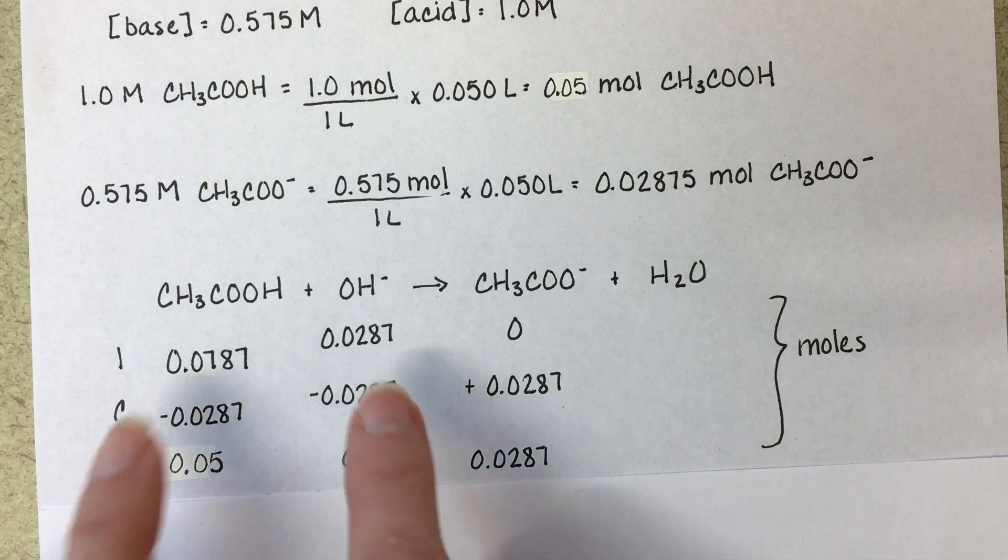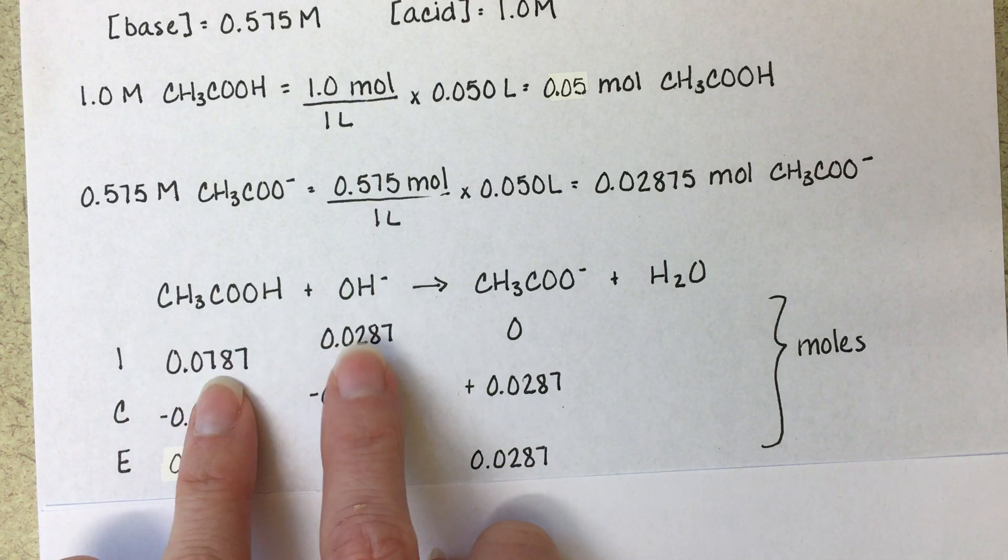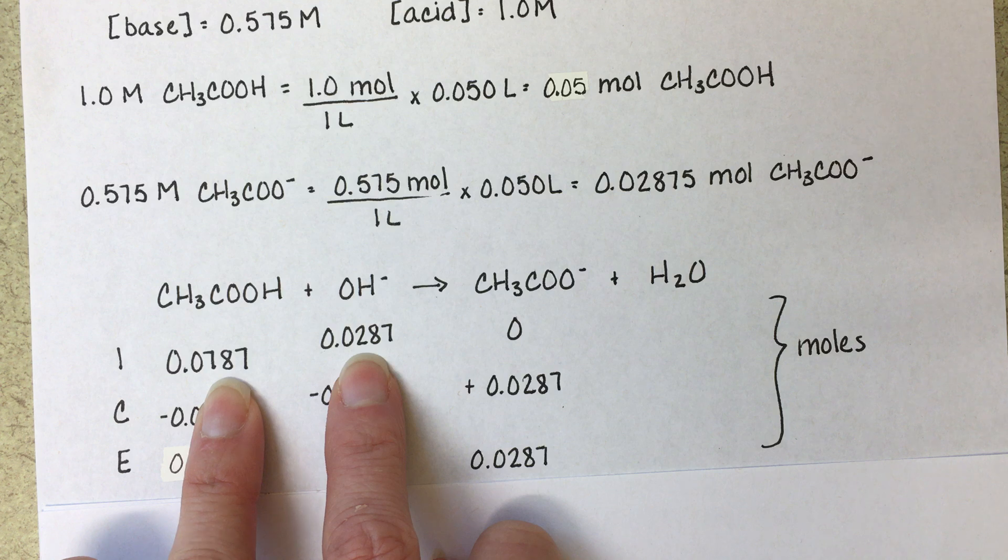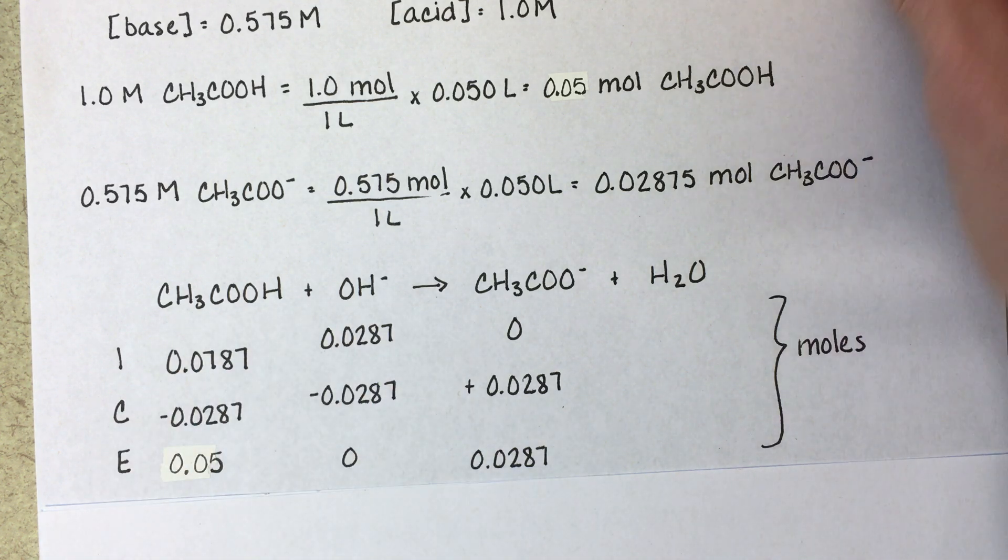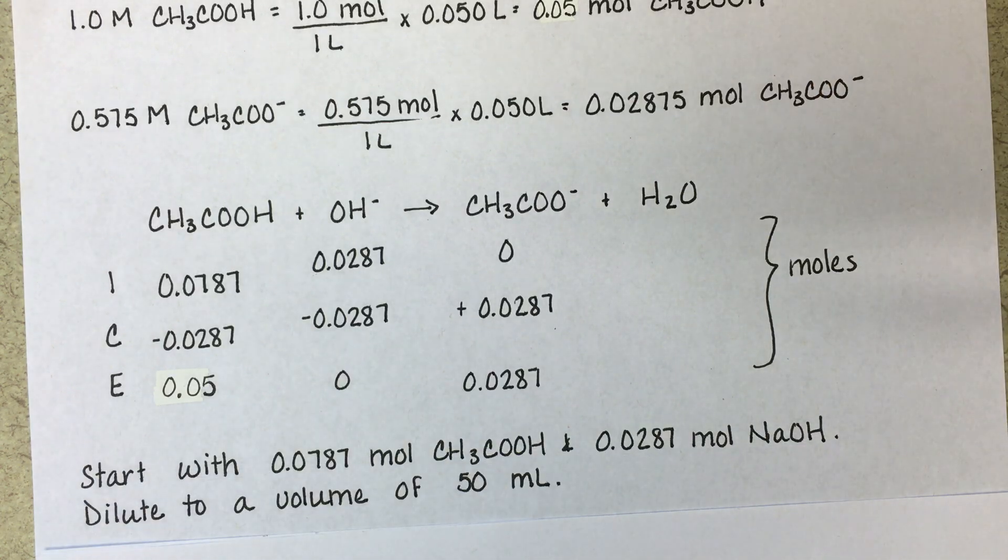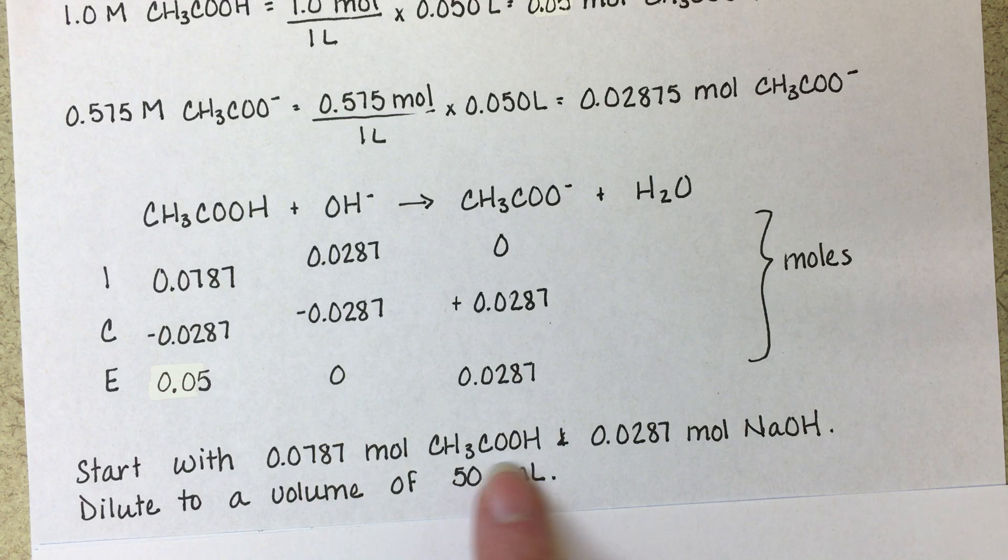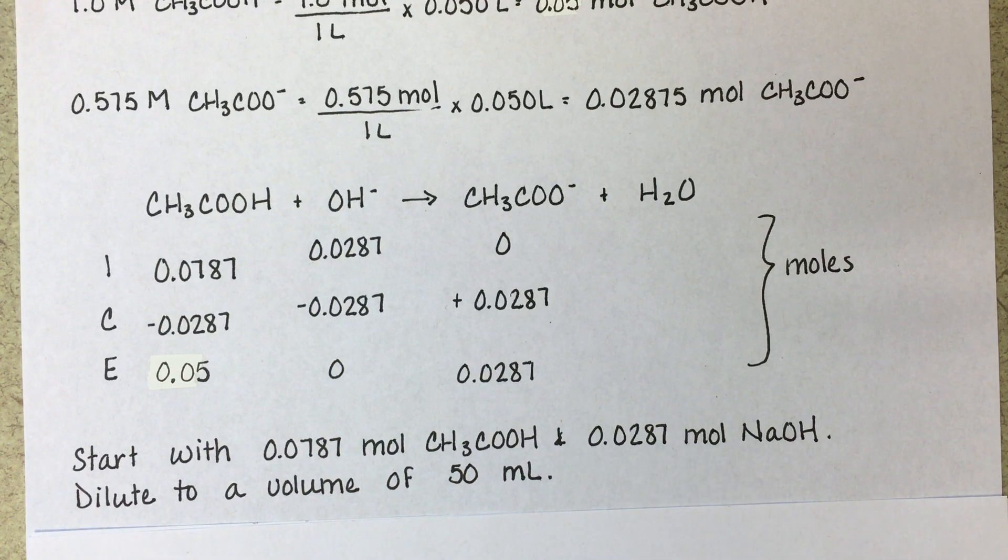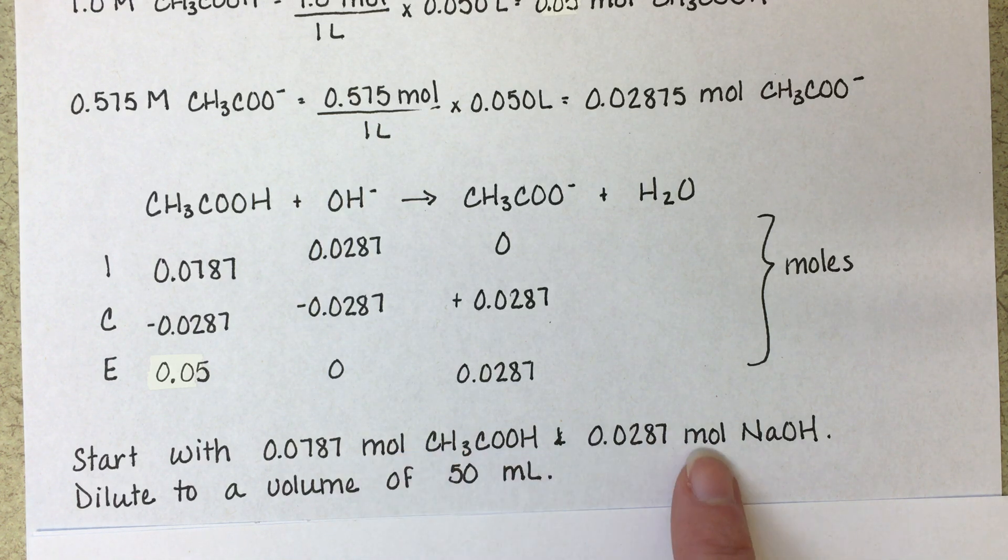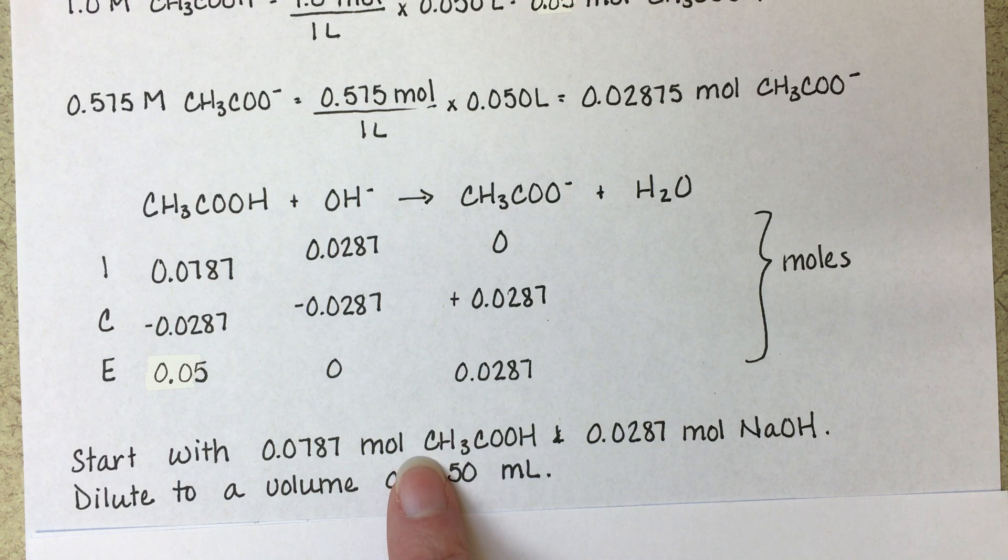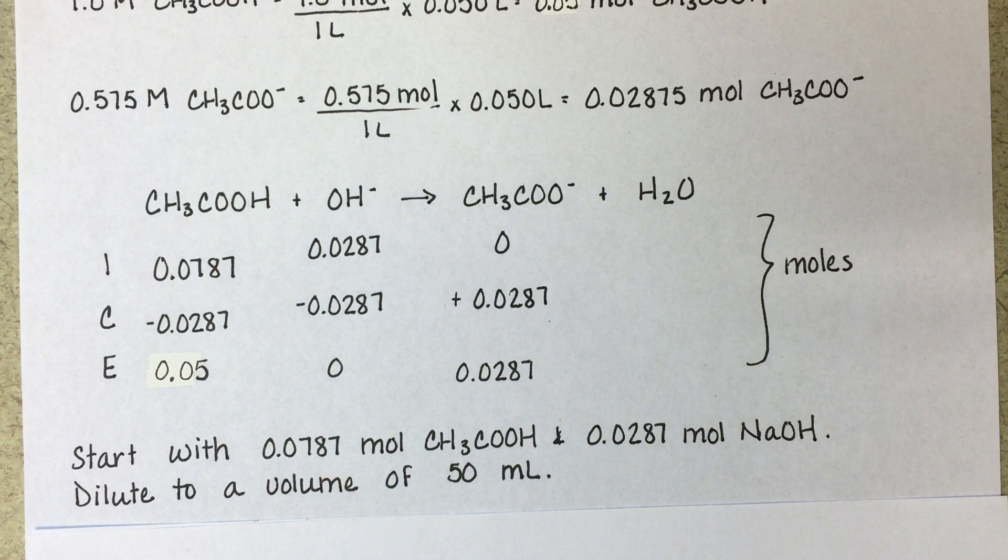So now we know the initial amounts of acid and hydroxide that we need to have in order to get the buffer of the right pH. So we are going to start with 0.0787 moles of acid and 0.0287 moles of sodium hydroxide. And not knowing if these are coming to us as a solid or as a solution already, if they're already a solution, we may need to dilute them to get a final volume of 50 milliliters.